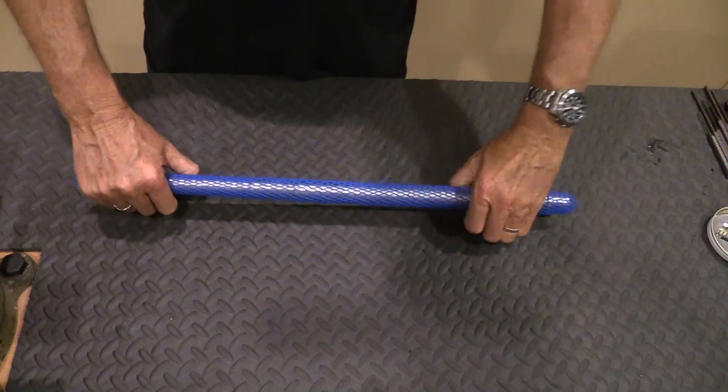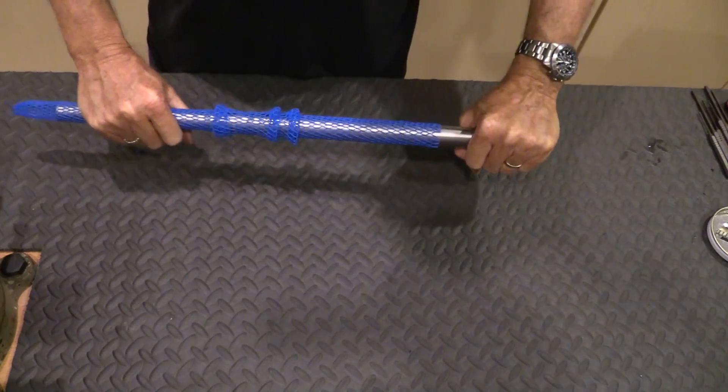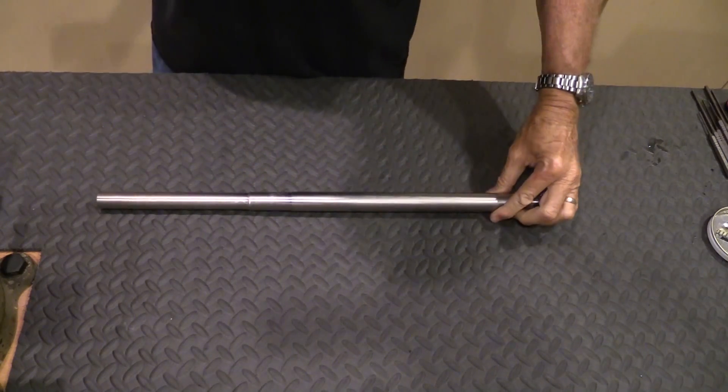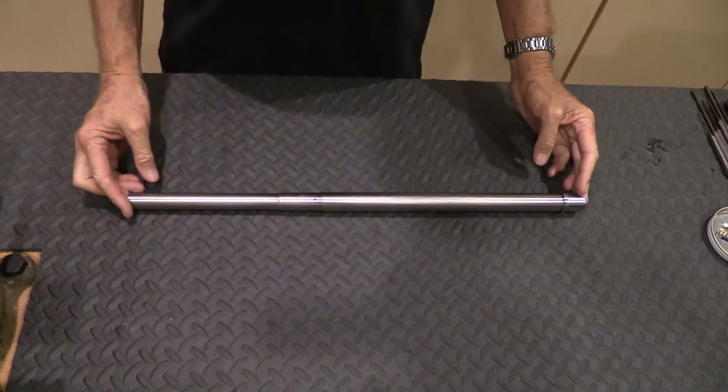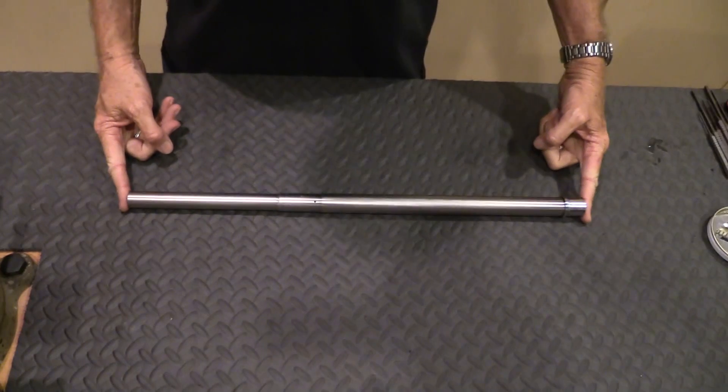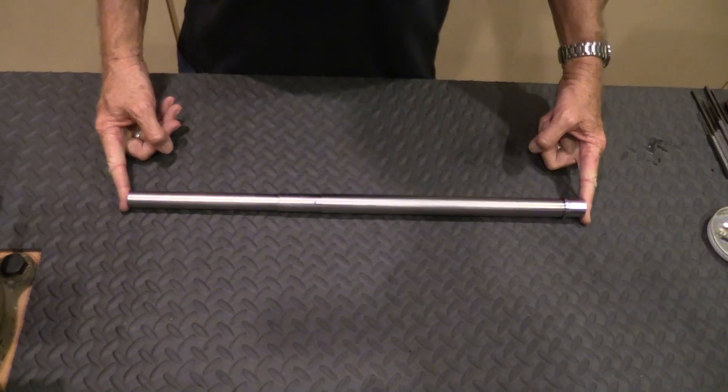Okay. So it's a stainless barrel, heavy barrel. The overall length of this barrel is 22 and 3/8 inches end to end.